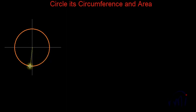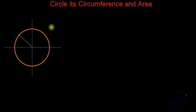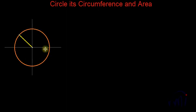All these points lie on the same distance from the center of the circle. All these distances are the same, and this distance is called the radius. This yellow line — if I thicken it — this yellow line is the radius of the circle, which is also the distance of the circumference or the boundary of the circle from its center.